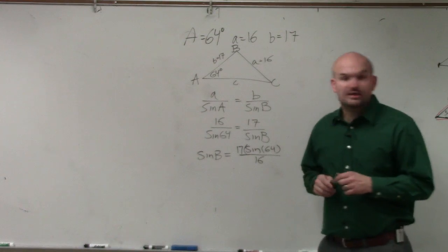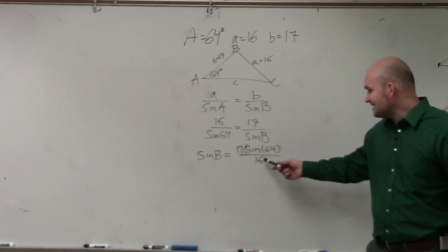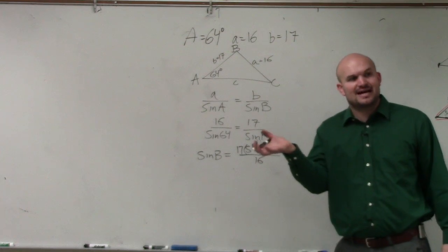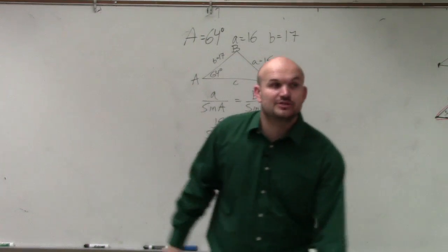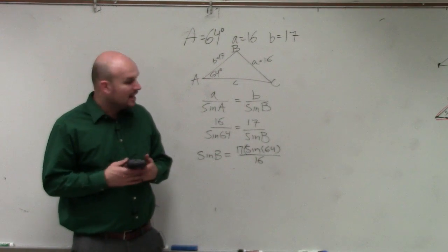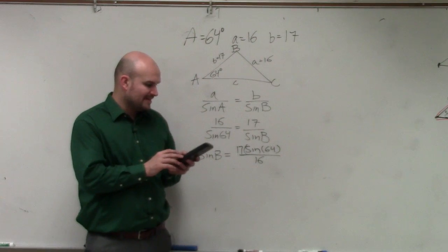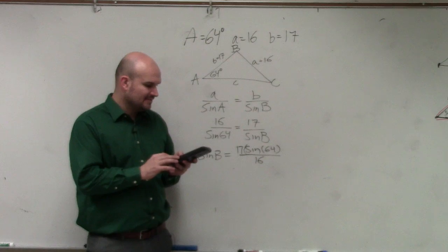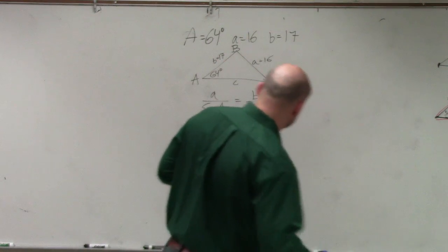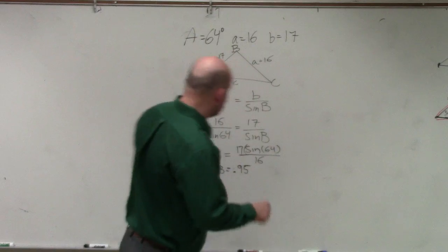We're going to simplify this. What you'll do is you'll type in the sine of 64 times 17 and then divide by 16. And what I get is sine of b equals 0.95. Now, I'm just going to approximate it.